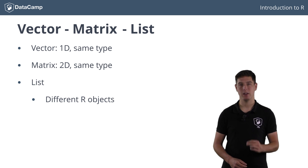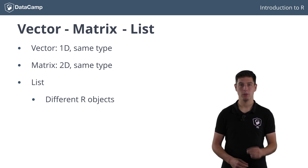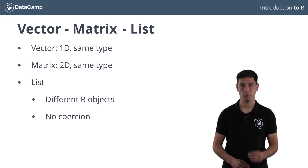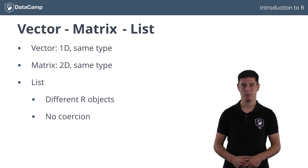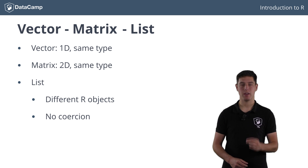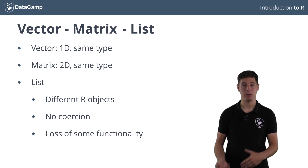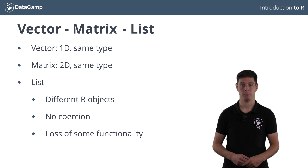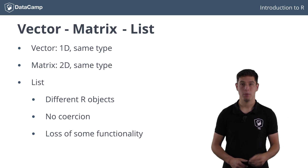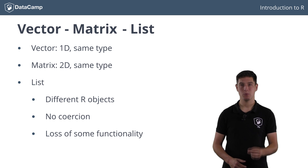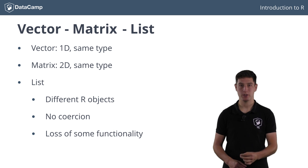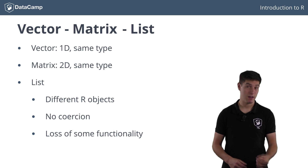All of this can be stored in a single list without R having to perform coercion to enforce the same type. That's pretty cool. Because lists can contain practically anything you can think of in R terms, you do lose some functionality that vectors and matrices offered. Most importantly, performing calculus with lists is far less straightforward, because there's no predefined structure that lists have to follow.